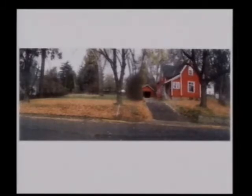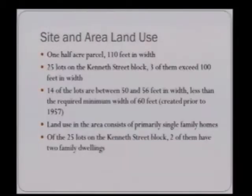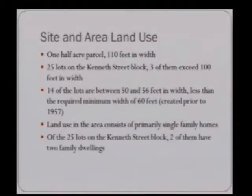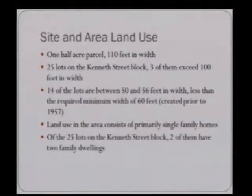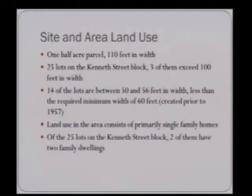Here's a photo of the site from Kenneth Street. The red home is the existing house. The subject property is a one-half-acre parcel, 110 feet in width. There are 25 lots on the Kenneth Street block. Three of them exceed 100 feet in width, and one of those is the subject property. Fourteen of the lots are between 50 and 56 feet in width, which is less than the required minimum of 60 feet — assumed to have been created prior to 1957, before the code was changed. Land use in the area consists primarily of single-family homes; however, there are two lots that have two-family dwellings on them.